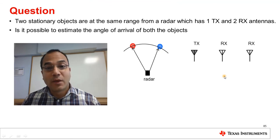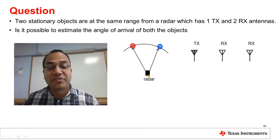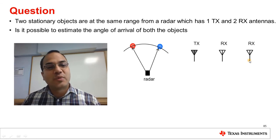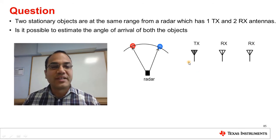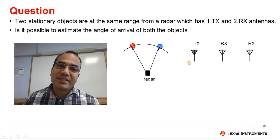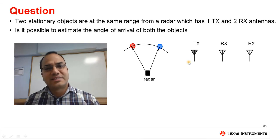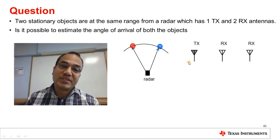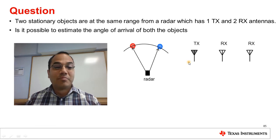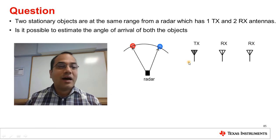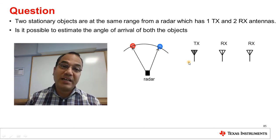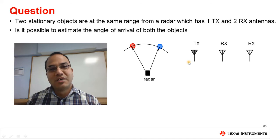To close this module: given two stationary objects at the same range from the radar, with one transmit and two receive antennas, is it possible to estimate the angle of arrival of both objects? Something for you to think about. This brings us to the end of this module. I hope that modules 1 through 5 have given you a reasonable understanding of millimeter wave sensing using FMCW radars. We hope to add more modules in future to build on what you've seen so far. Goodbye.